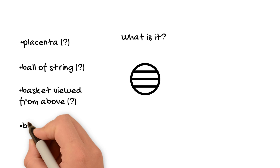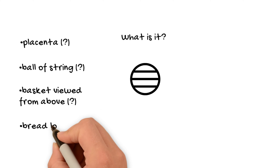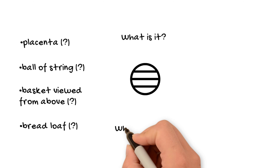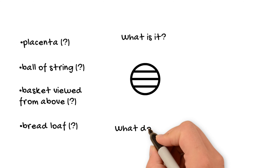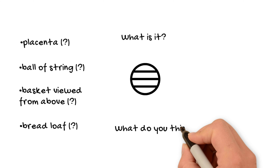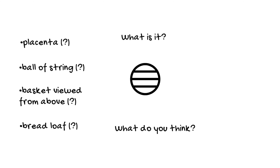So I don't know — I can't tell you which one it is. It's hard to say when you just have a circle. Sometimes it has a stripe, sometimes it doesn't. So tell me in the comments, what do you think? Placenta, ball of string, basket, bread loaf? You pick.